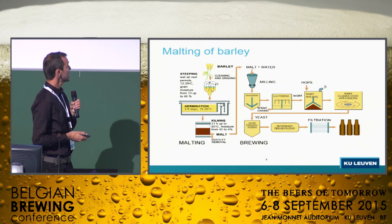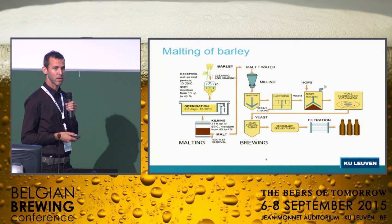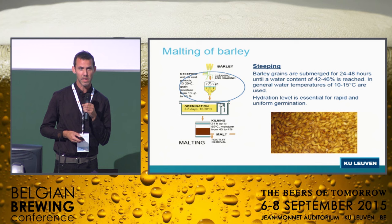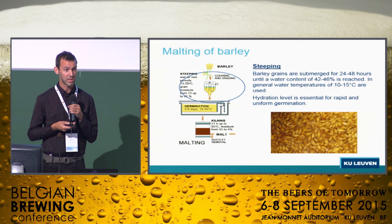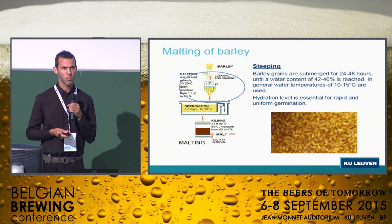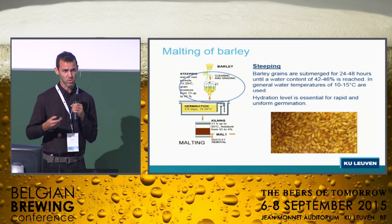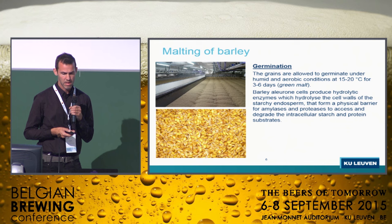I'm focusing on the process because it's important to know the different steps when we're going to talk about the microbes occurring in these steps. The malting can be divided in three steps. The first step is steeping — the grains are submerged during 24-48 hours until a water content of 40-46% is reached. In general, the water temperature is about 10-15 degrees Celsius, which is quite cold and has an influence on the microbes.